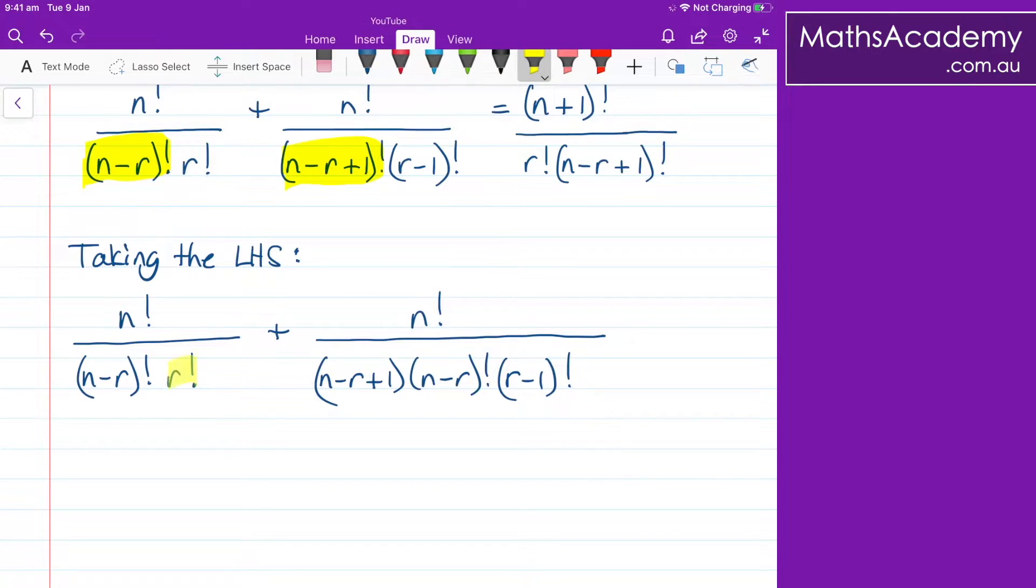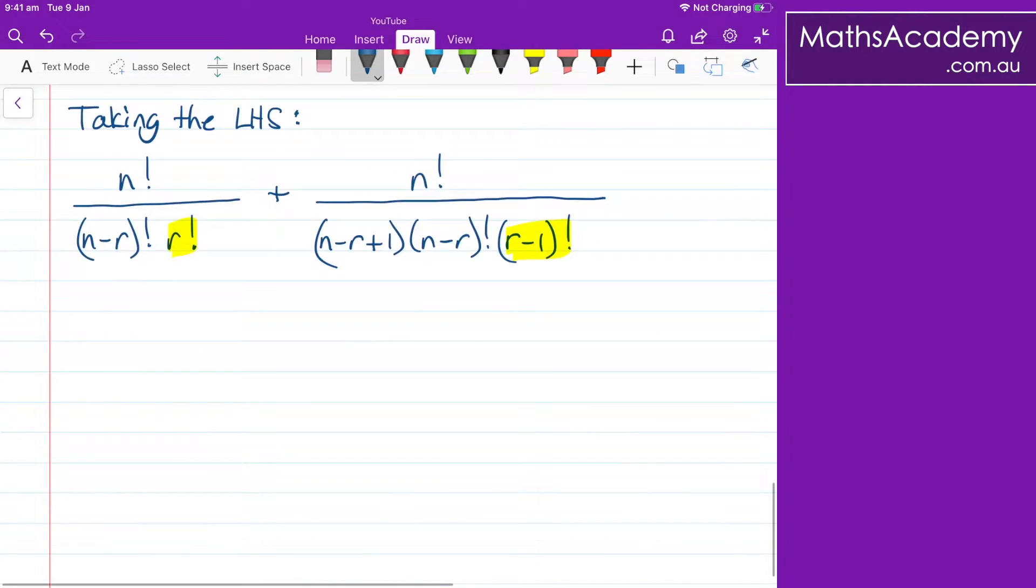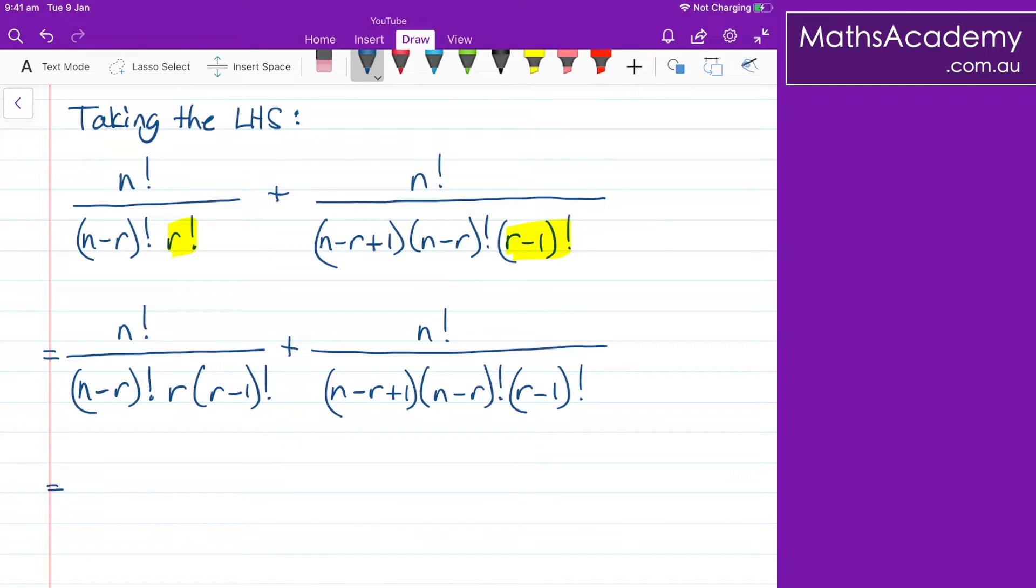Similar thing again with this r term here. We've got this r factorial and the r minus one factorial. So that tells me that on the left hand side, I'm going to break that one down. I've got n factorial all over the n minus r factorial. Now for this term, that's going to be r, and then one less than r is r minus one factorial. On the right hand side, that doesn't change.